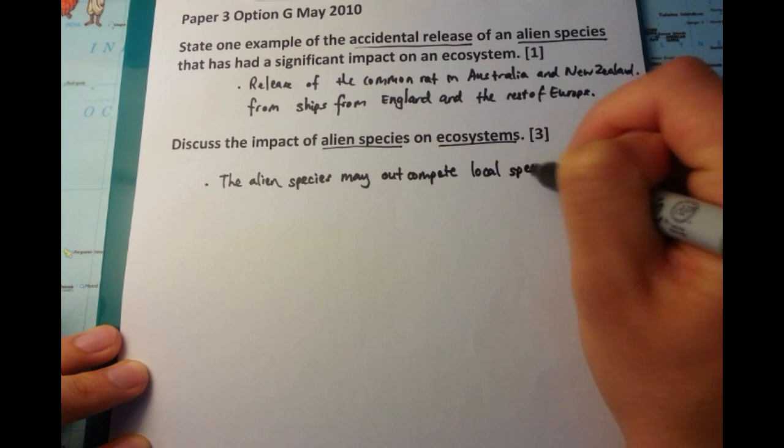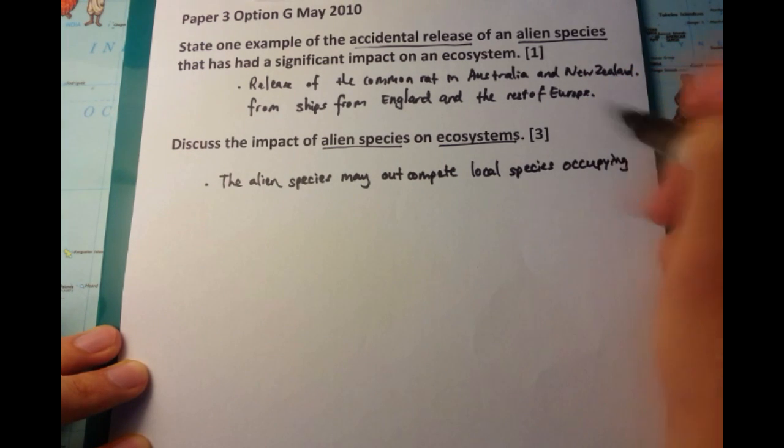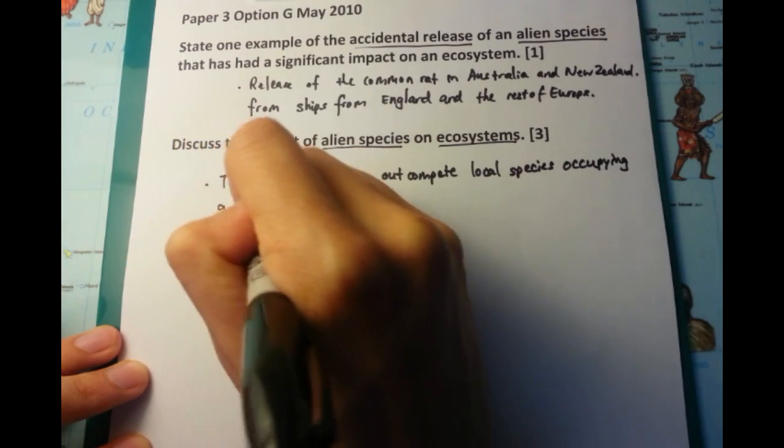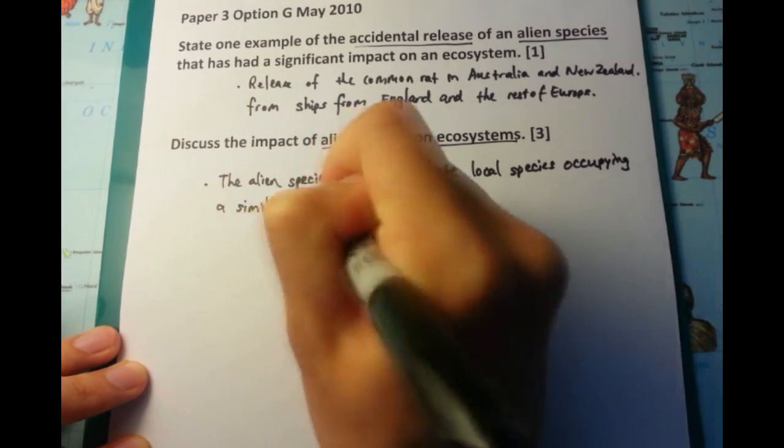In this case, the alien species may outcompete local species, which occupy a similar niche. So say, for example, you've got a domestic bilby.